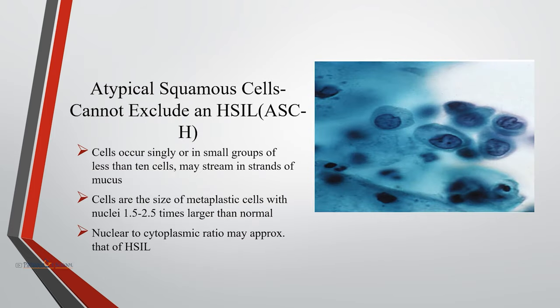Atypical squamous cells — cannot exclude high-grade squamous intraepithelial lesion (ASC-H) — when cells occur singly or in small groups of less than 10 cells, they may be seen in strands of mucus. Cells are the size of metaplastic cells, with nuclei 1.5 to 2.5 times larger than normal. The nuclear-to-cytoplasmic ratio may approximate that of high-grade squamous intraepithelial lesion.